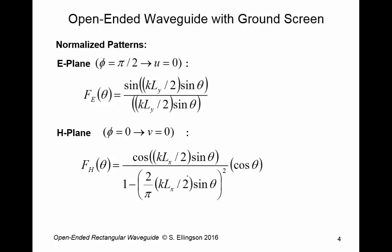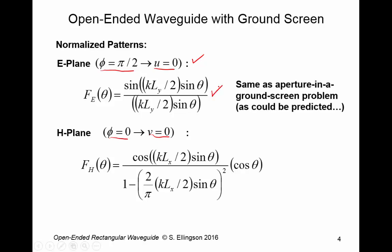So what we find here is that for the open-ended waveguide in the ground screen, the normalized patterns look like this. We can identify an E-plane pattern, which is that in which phi is pi over 2 or u is 0, equivalently. In the H-plane, phi is 0 or v is 0, equivalently. In the E-plane, the normalized pattern is this thing. And this is the same result that we got for an aperture and a ground screen problem with uniform excitation. So what we're finding here is we change the excitation and we're seeing the same result for the E-plane pattern. Now you can anticipate this because the variation of this new aperture field in the y direction is the same as it was in the previous problem.